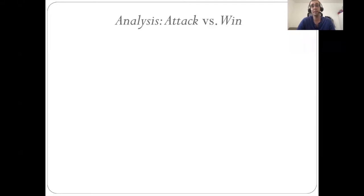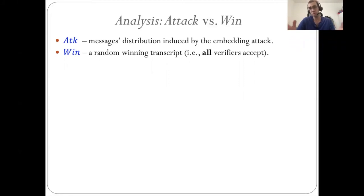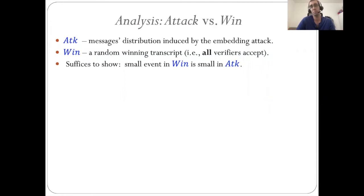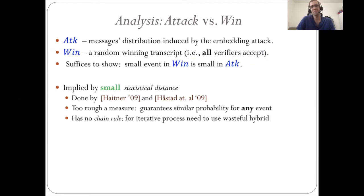How do we analyze the success probability of this attack? We consider two distributions, 'win' and 'attack': 'attack' is the distribution of all verifier messages induced by this attack, and 'win' is the distribution of a random winning transcript in which all verifiers accept. For our goal, it suffices to show that small events in 'win' map to small events in 'attack'. We can do this by bounding statistical distance, as done by Heidner and Hassett et al., but the problem is it's too rough a measure — it guarantees similar probabilities for any event, not just small ones, and this too-strong guarantee is inherently not tight for small events. It also has no chain rule.